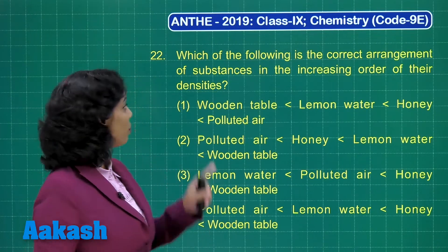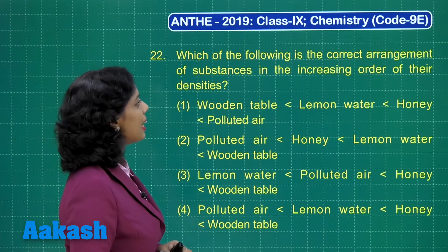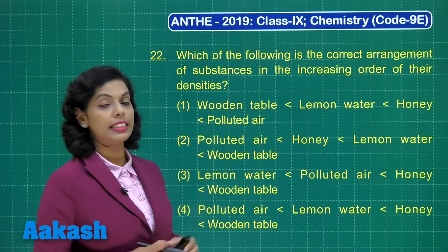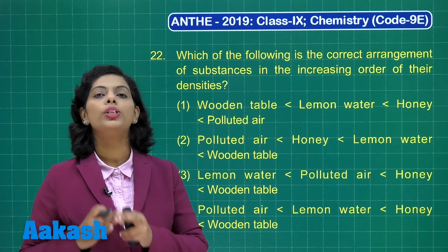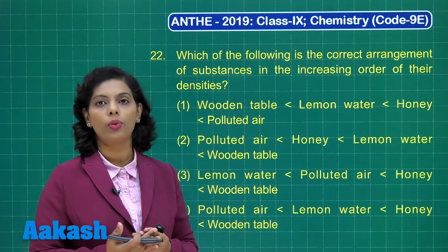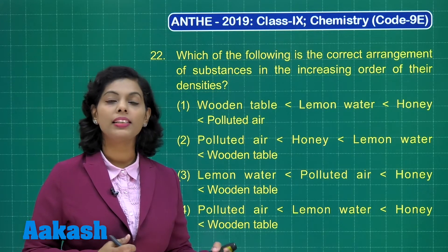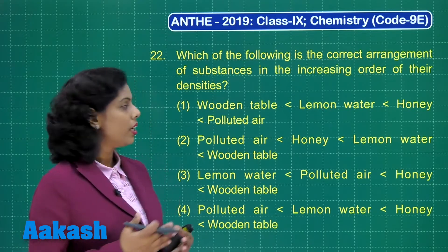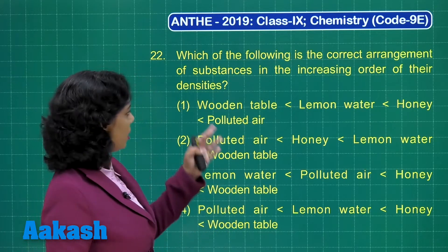Let's take question number 22: which of the following is the correct arrangement of the substances in the increasing order of their densities? Density is mass per unit volume. The substances present around us have certain densities that depend on their mass as well as the space occupied by them. We need to compare the densities given in each option.